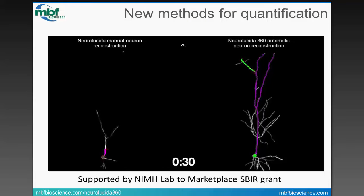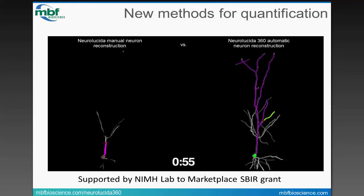Neuralucida was originally developed for tracing at the microscope, first by looking through the oculars, and then by looking at a monitor with a live digital camera image. The way the image data is presented within the program is consistent with this view from the microscope. You create trace data by navigating up and down through the image, one focal plane at a time. To view the model in 3D, you launched a 3D visualization window, which allowed you to look at, but not touch, the data.